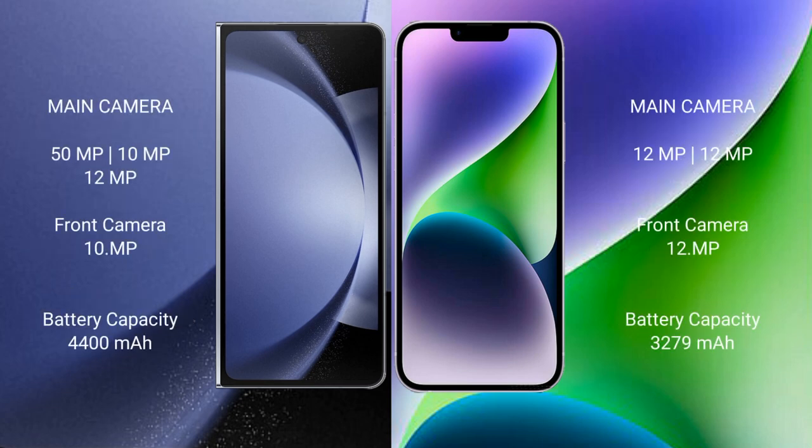Samsung Galaxy Z Fold 6 comes with a rear triple camera setup: 50MP plus 10MP and 12MP, and a 12MP front camera with a 10MP inner camera. iPhone 14 has a rear dual camera setup: 12MP and 12MP, with a 12MP front camera.